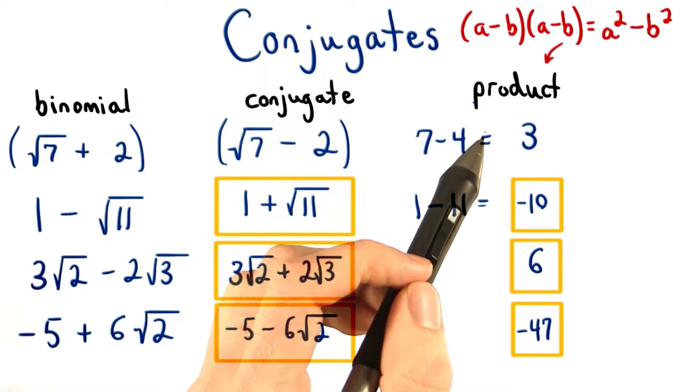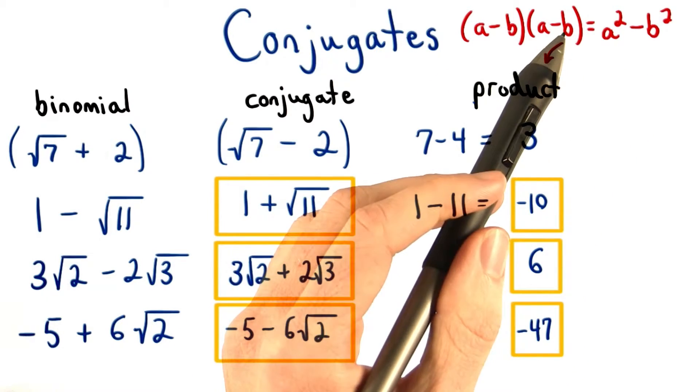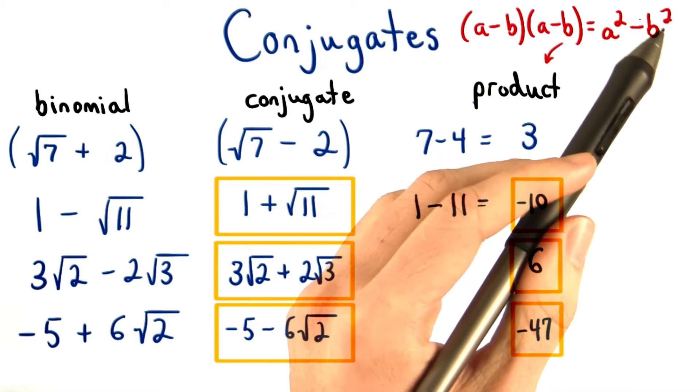For the products, we want to use our pattern for the difference of two squares. We know the product of two binomials with differing signs will be a squared minus b squared.